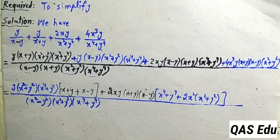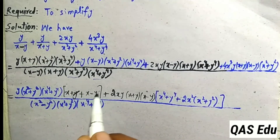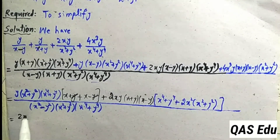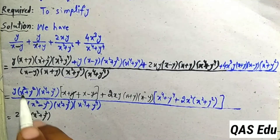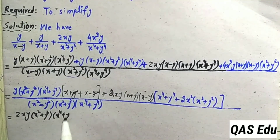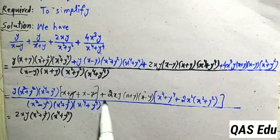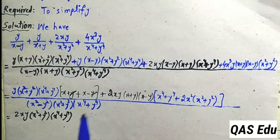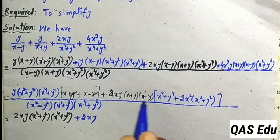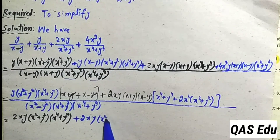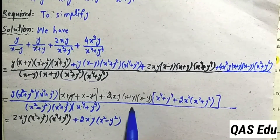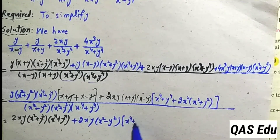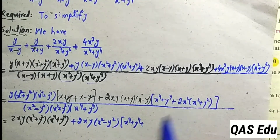We have x minus y or plus y cancel. x and x is 2x. 2x will multiply x⁴+y⁴. Into a-minus-b double: a²-b², a-plus-x, b-plus-y double simplification. x⁴+y⁴ plus 2x.